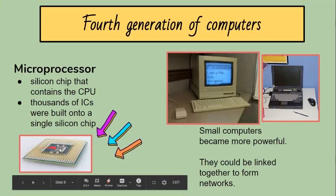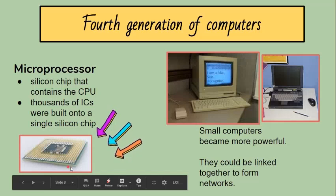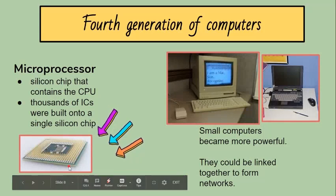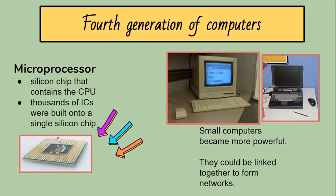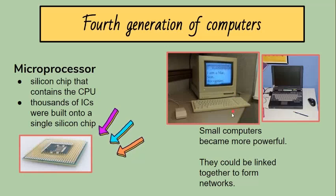The microprocessor brought the fourth generation of computers, as thousands of integrated circuits were built onto a single silicon chip. A microprocessor is a silicon chip that contains the CPU, or central processing unit, the part of the computer where all processing takes place. The Intel 4004 chip, developed in 1971, located all the components of the computer. The fourth generation also saw the development of GUIs, the mouse, and handheld devices. What in the first generation filled an entire room could now fit in the palm of the hand.